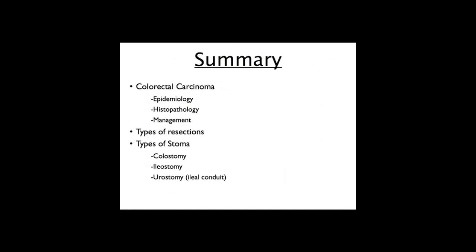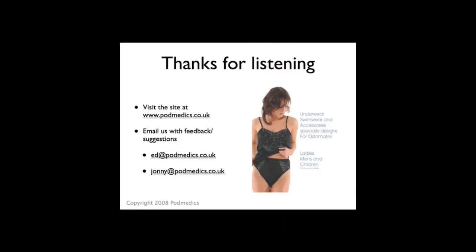That completes this podcast on colorectal carcinoma, resections, and stomas. We've looked at important features of this disease including histopathology and key management principles. Remember your Dukes criteria and grading systems. We've covered types of resections - try to remember the blood supply and different tumour positions and how they correspond to the operation. Finally, we've discussed the types of stoma - have a look at that table and try to examine some stomas on the wards. Thanks for listening, we'll see you again soon. For other podcasts and additional supporting materials, please visit podmedics.co.uk.